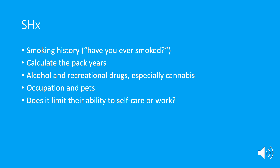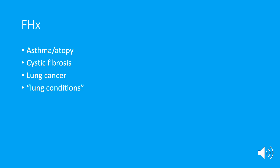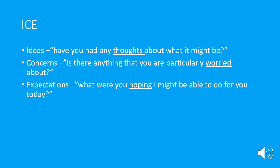It's also relevant practically — from a GP or hospital context, you may need to provide a sick note if they're not fit for work. For family history, ask about asthma and atopy — that's asthma, hay fever, eczema, and food allergies in the family. Is there a family history of cystic fibrosis or lung cancer? You can ask about lung conditions generally, and remember the cardiac overlap — it may be relevant to ask about cardiac family history as well.